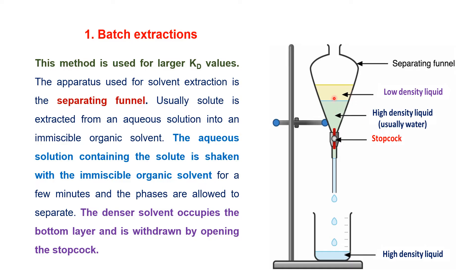There are two solvents: water, which usually contains the solute, and a low-density organic solvent. These are shaken together for a minute and the phases are allowed to separate. The denser solvent occupies the bottom layer and is withdrawn by opening the stopcock. The denser layer is removed from the separating funnel, and the low-density liquid remains in the separating funnel.